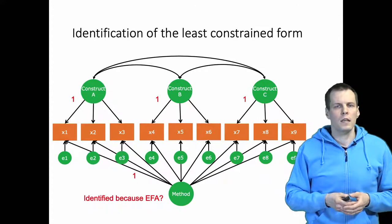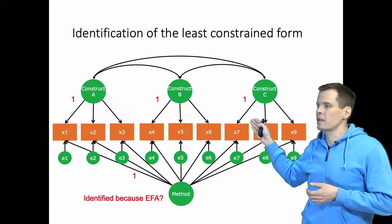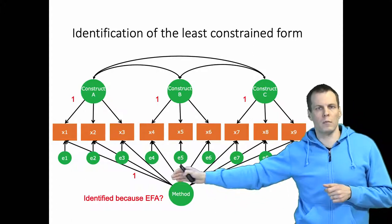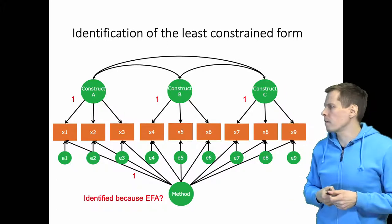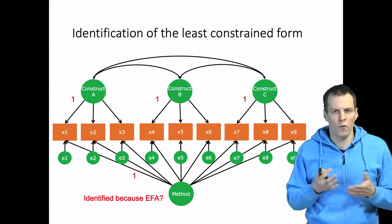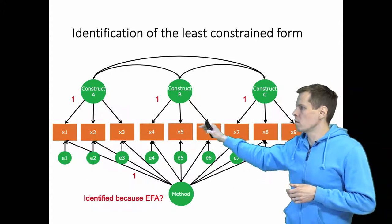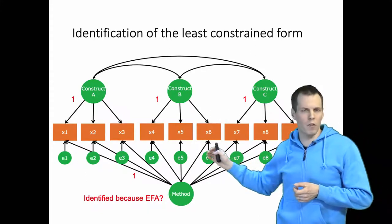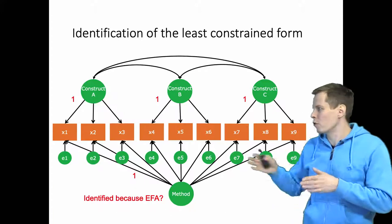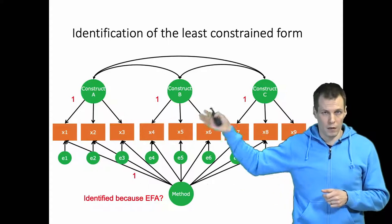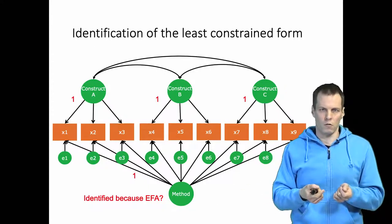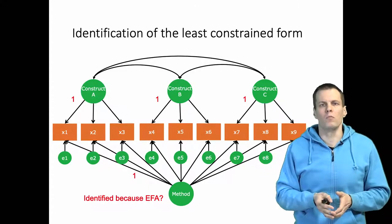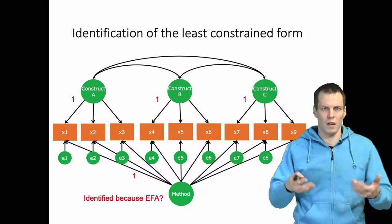So is this model identified? In the least-constrained form, scales are set by fixing the first indicators to load with one, same for the method factor, and we are not constraining the method factor indicator loadings. We could argue this is identified because it's kind of like an exploratory factor analysis with four factors and a rotational criterion: A is rotated to be uncorrelated with x4 through x9, B does not affect x1–x3, and the method factor is rotated to be uncorrelated with other factors. Whether that reasoning is correct, I don't know — it sounds reasonable but I would ask for more evidence.